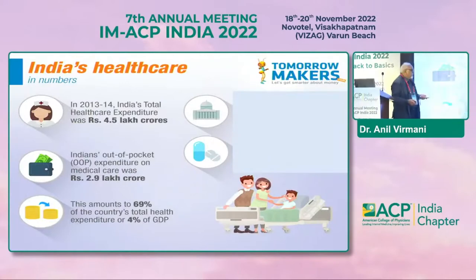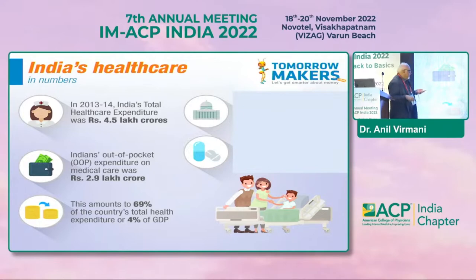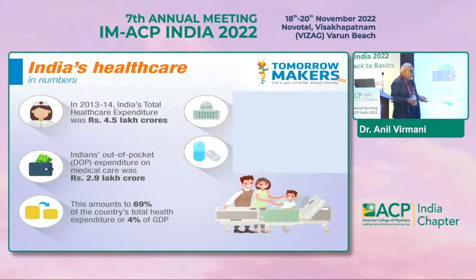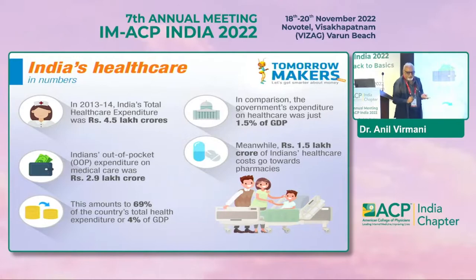Let's look at Indian healthcare. In 2013-14, India's total healthcare expenditure was $4.5 lakh crores. Unfortunately, the majority was being spent from individual pockets — $2.9 lakh crores — equivalent to 4% of GDP. In comparison, the government's expenditure on healthcare was just 1.5% of GDP. The Indian government was not spending much on healthcare.